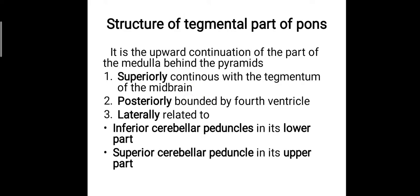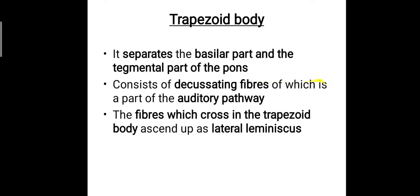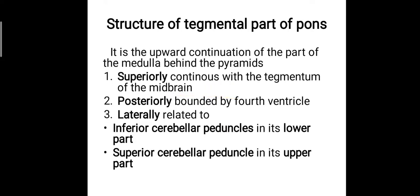The tegmental part of the pons is the upward continuation of the part of the medulla behind the pyramids, which we will be studying in the next class. Superiorly it is continuous with the tegmentum of the midbrain. Posteriorly it is bounded by the fourth ventricle.